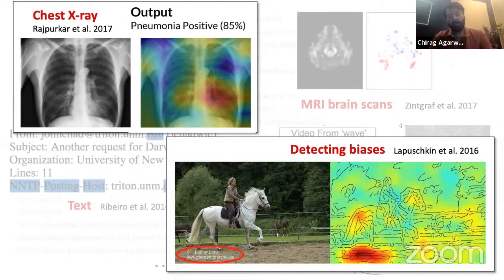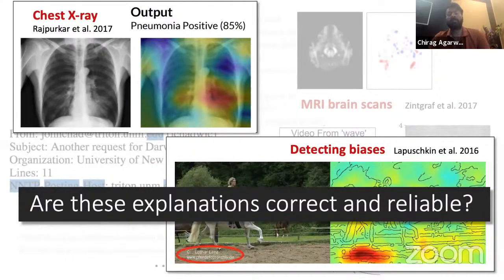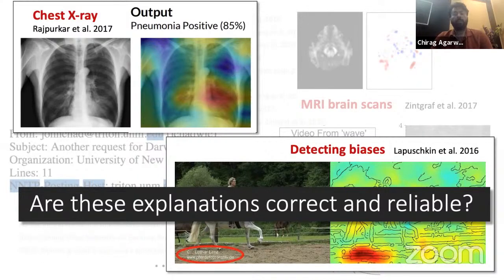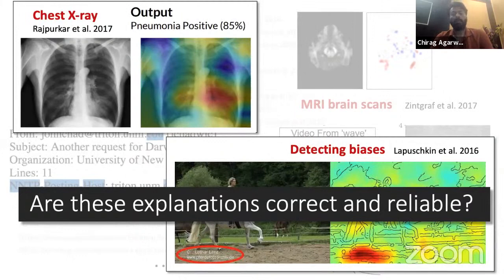Having shown both positive and negative use cases, we still have to answer: are these explanations correct and reliable? We cannot treat explanation algorithms like black-box models — simply accepting whatever output they produce and being happy about it. We have to answer whether these explanation maps are actually reliable and correct.